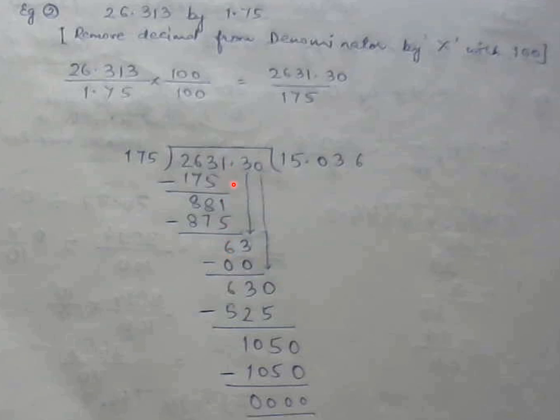So then 175 fives are 875. On subtracting I will get 6. Now if you see a decimal is here, I will place a decimal in the quotient area and I will copy the next digit that is 3. So 6 and 3 became 63. Now 63 will go only 0 times. So 175 zeros are 0. 63 minus 0 will be 63.